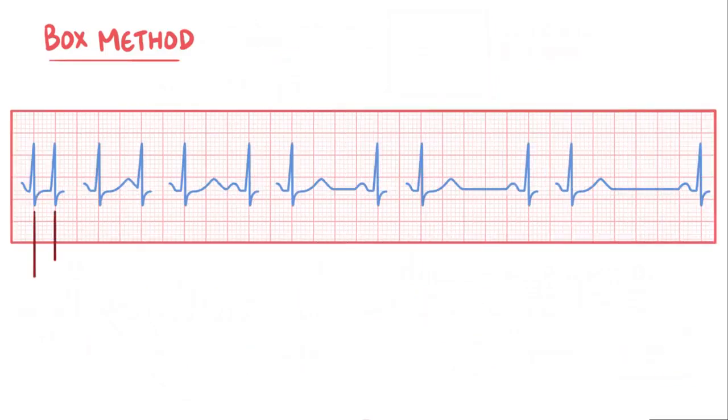Now if the distance between two R waves is exactly one box, then the heart rate would be 300 beats per minute, which is really fast. If R waves are 2 big boxes apart, or 0.4 seconds, then the heart rate is 150 beats per minute. Three big boxes apart is 100 beats per minute.